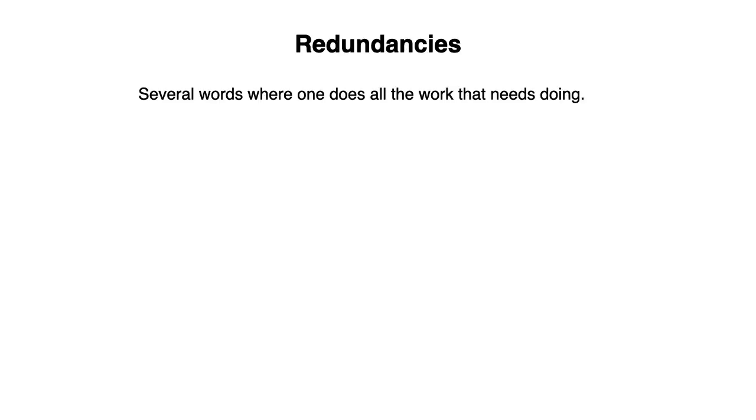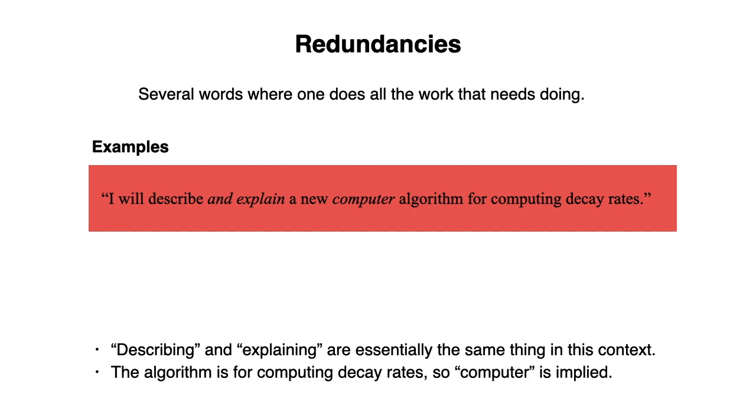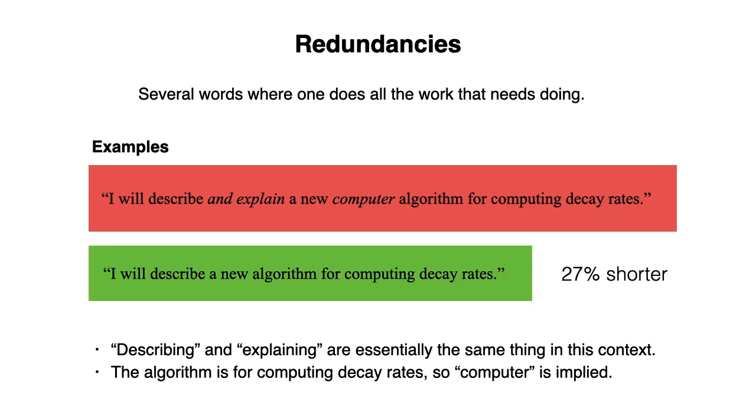Your writing has redundancies if you use several words where one does all the work that needs doing. Let's look at an example. I will describe and explain a new computer algorithm for computing decay rates. The words describing and explaining are essentially the same thing in this context. And the algorithm is for computing decay rates, so computer is implied. We could instead say, I will describe a new algorithm for computing decay rates, which is 27% shorter.